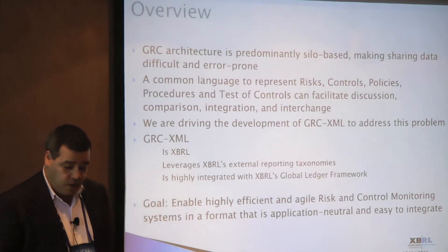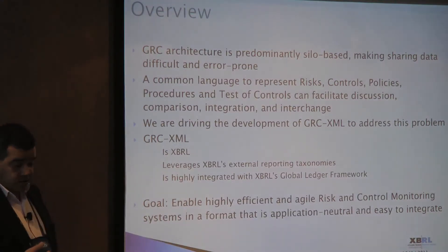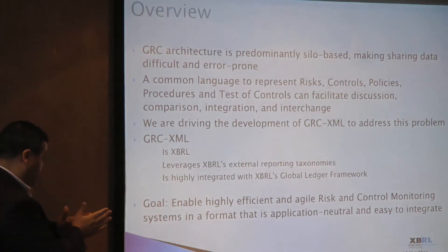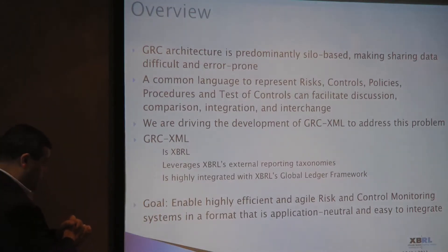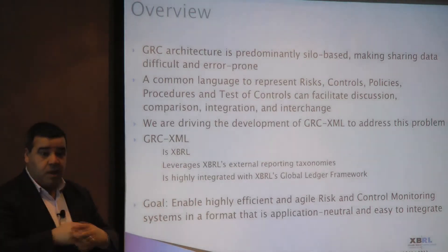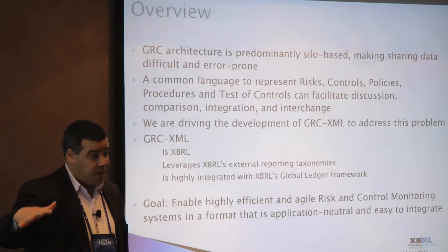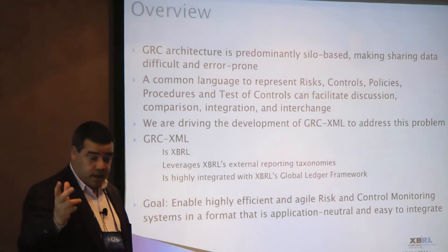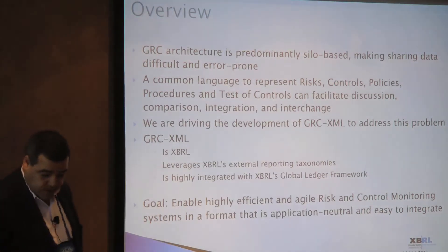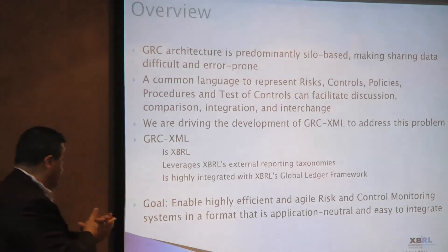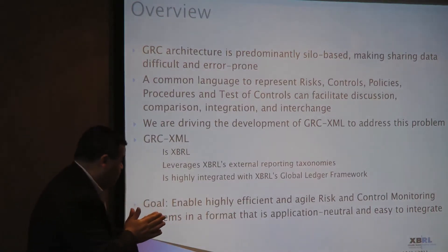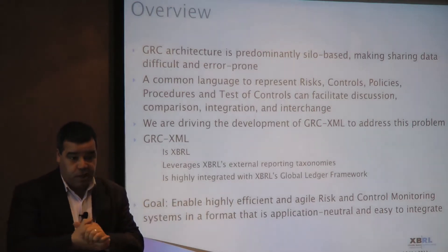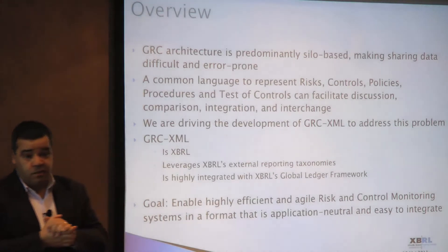I've been involved with standards organizations from OMG to W3C to OASIS. There's been some meta-modeling effort personally within OMG, but we haven't seen any area where GRC information has been standardized. GRC XML is actually XBRL when you look at the examples — you'll see XBRL behind the scenes. It is highly integrated with XBRL's Global Ledger framework to enable transparency from the lowest level of data — account balances — up to company objectives, division goals, and subsidiary levels.